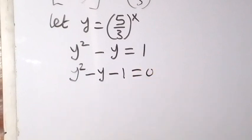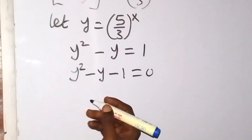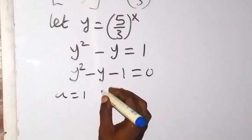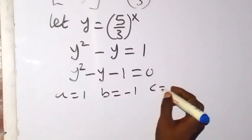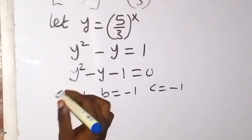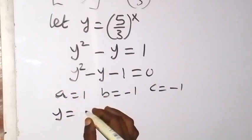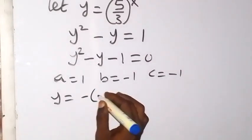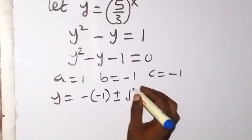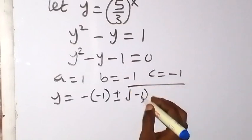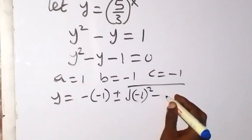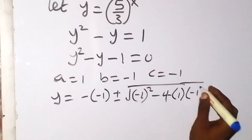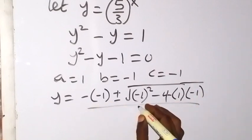We can solve for y using the quadratic formula. Here a is 1, b is minus 1, and c is also minus 1. Applying the formula: y equals minus b plus or minus square root of (b squared minus 4ac), all over 2a. That gives minus (minus 1), plus or minus square root of (minus 1) squared minus 4 times 1 times (minus 1), all over 2 times 1, which is 2.